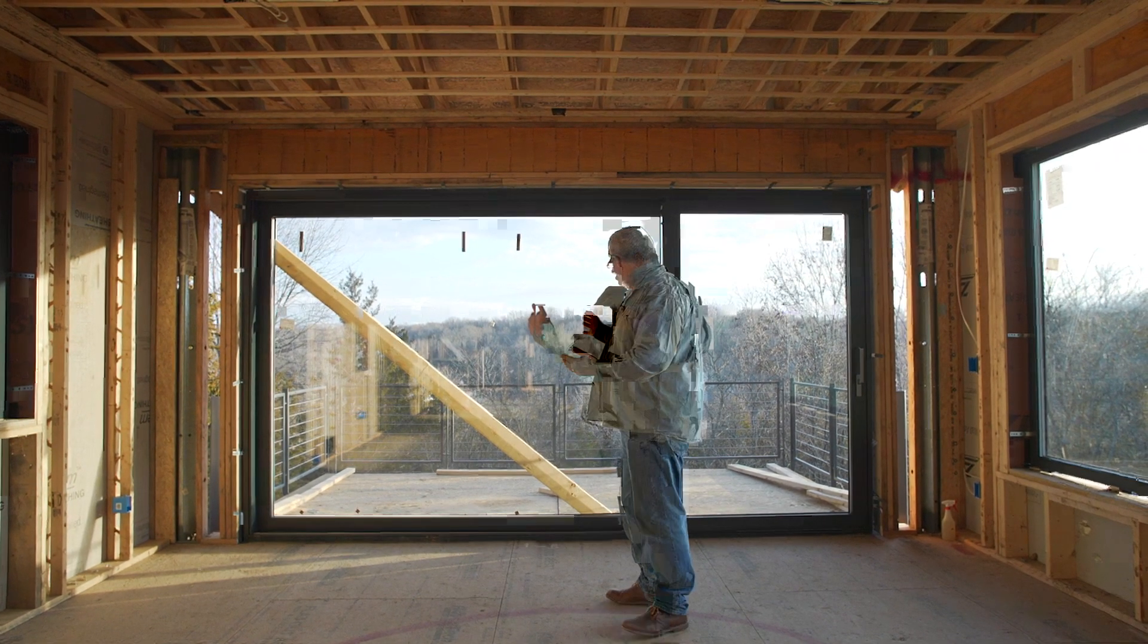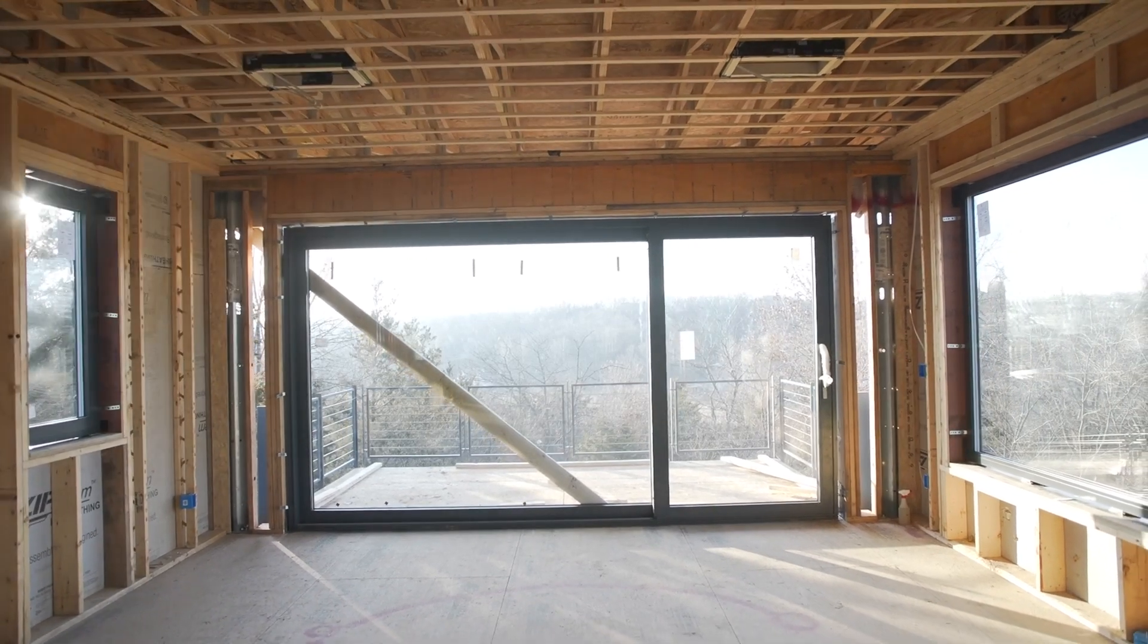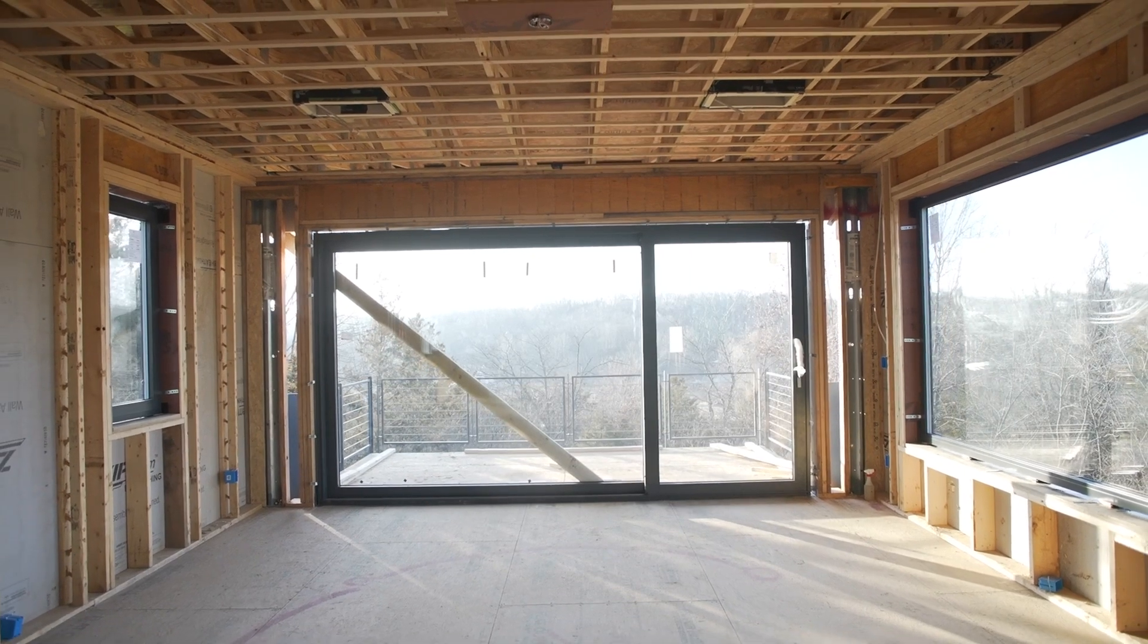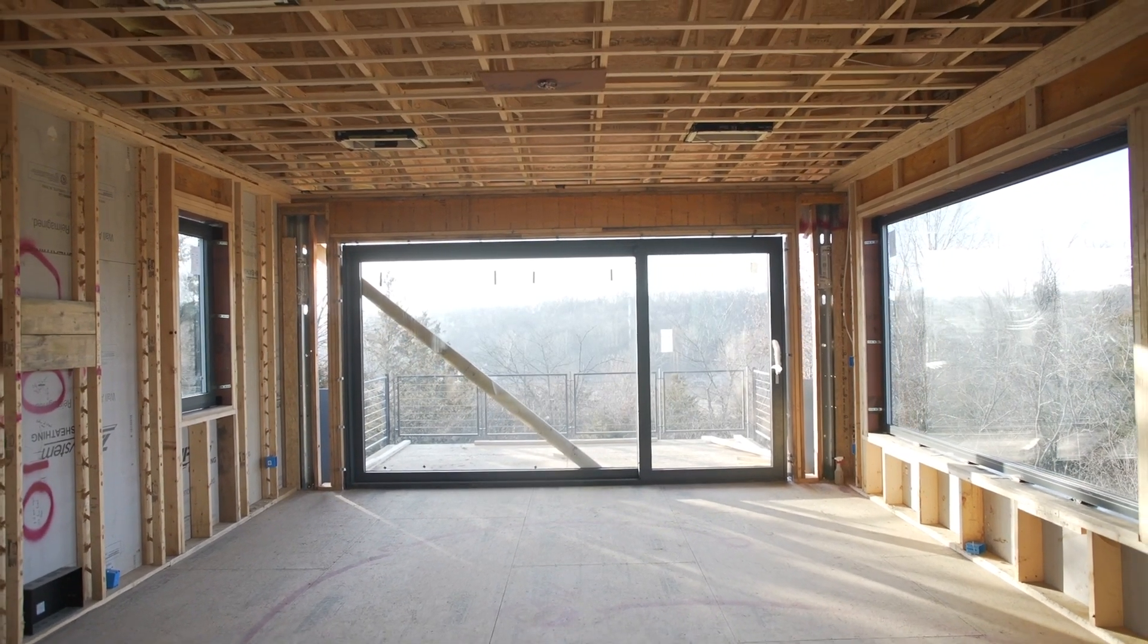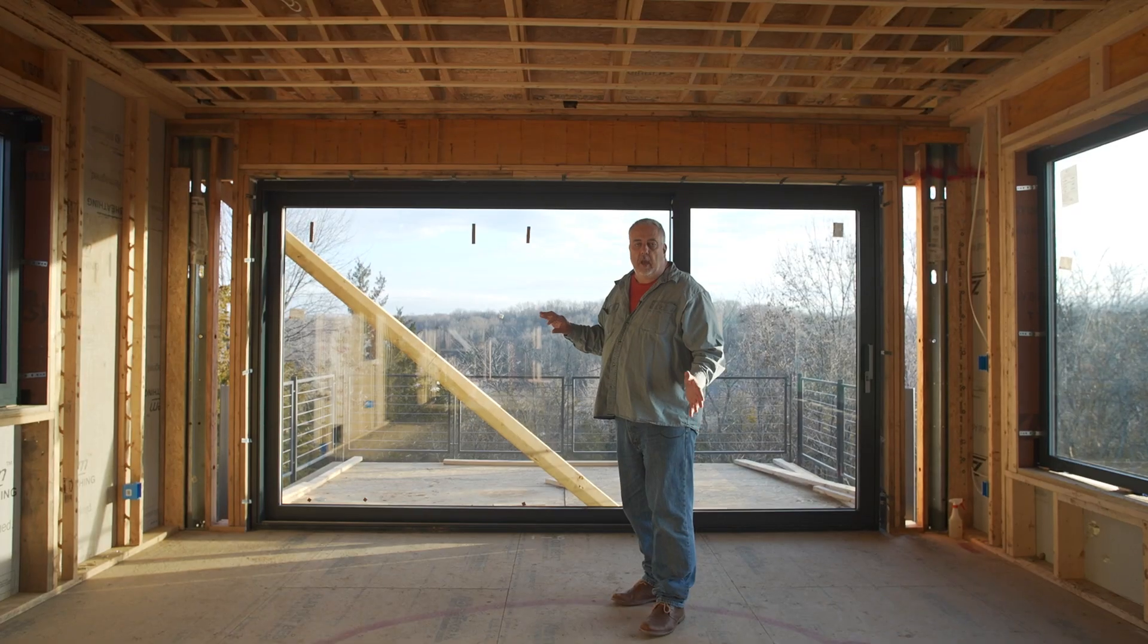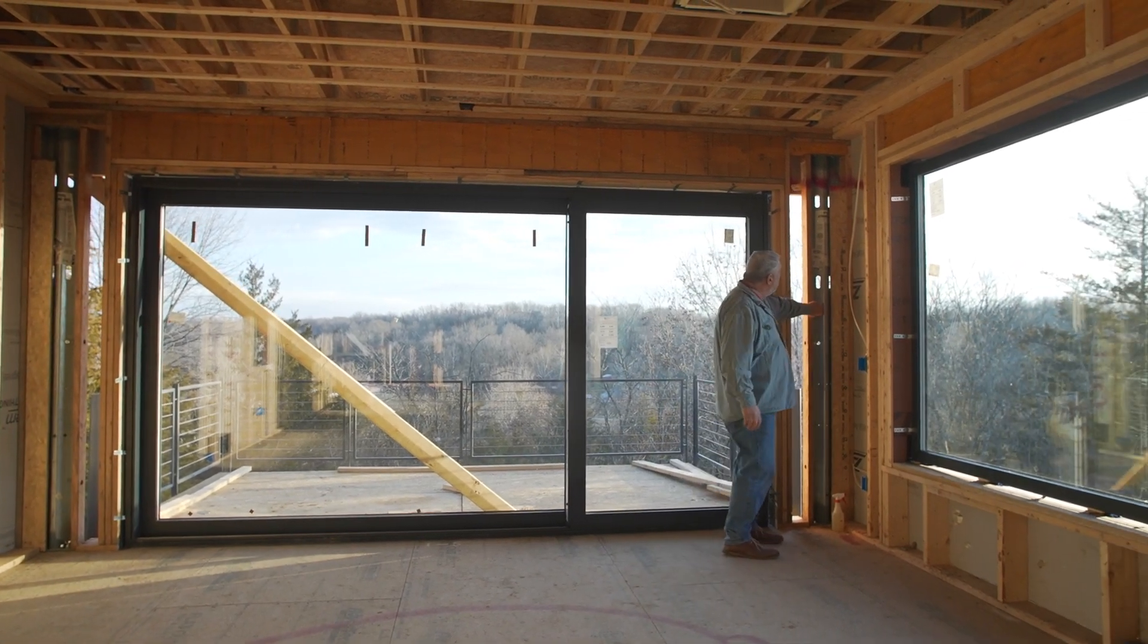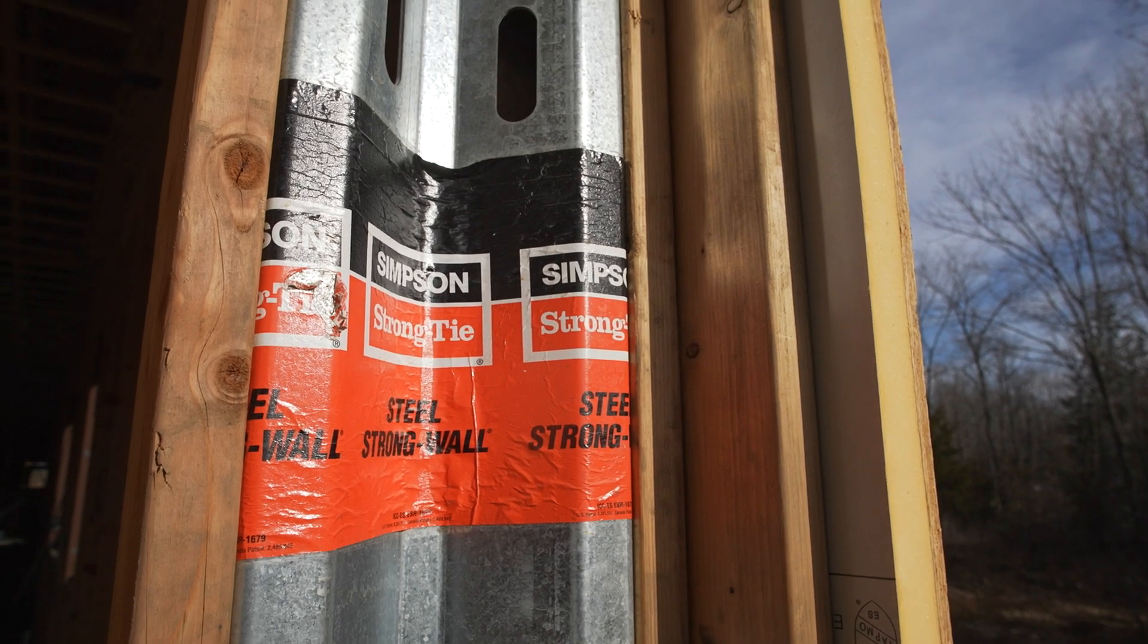So the question was, how big does this door come? Because the wider we make this door, the harder it is to structurally resolve this wall due to the shear values. And so what you can see here is we have this corrugated metal, and what that is is basically a Simpson strong wall.